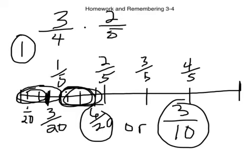So, 6 20ths or 3 10ths would be your answer for number 2. Okay. Try it out on the other ones. I know it's really hard to see on this.